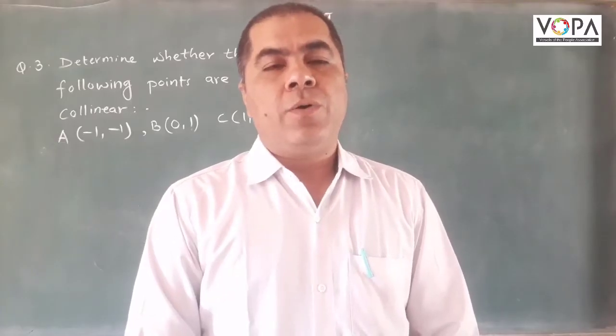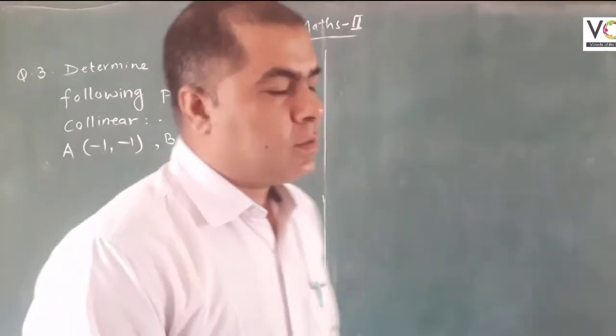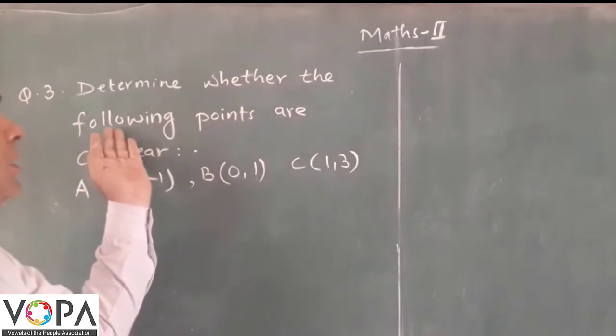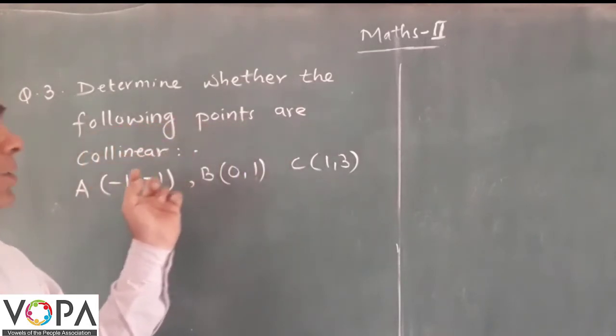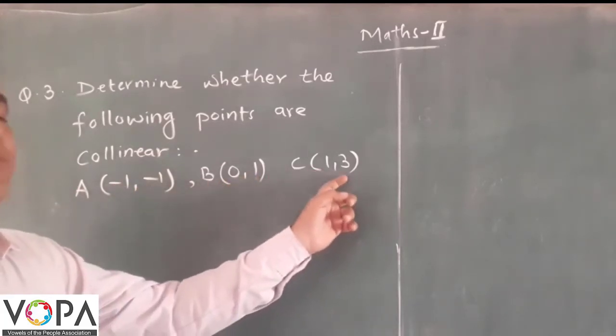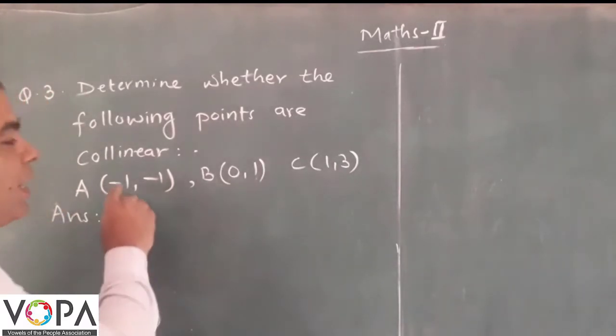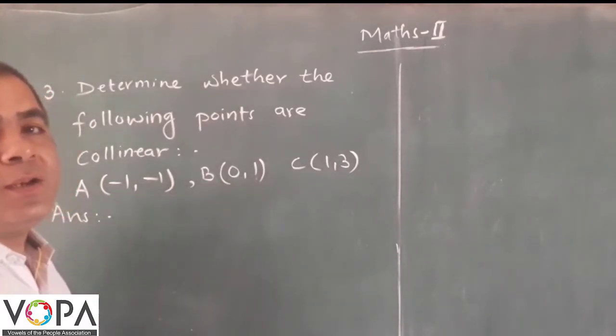Hello students, now take another example on slope of a line. Determine whether the following points are collinear: A(-1,-1), B(0,1), and C(1,3). We have to determine whether these are collinear or not. Here we use the slope of line. First, find the slope of line AB.